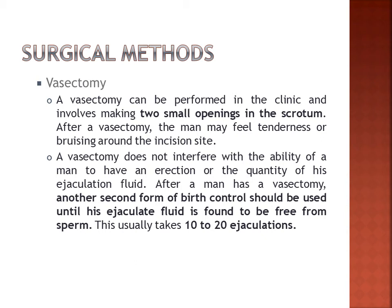Just to note: surgical methods are irreversible, unlike artificial and natural methods. After a vasectomy, another form of birth control should be used until the ejaculate fluid is found to be free from sperm, which usually takes 10 to 20 ejaculations. After that point, the vasectomy will render the man infertile for the rest of his life.